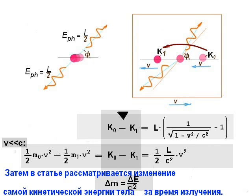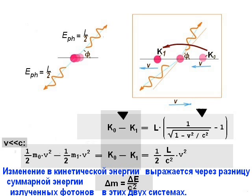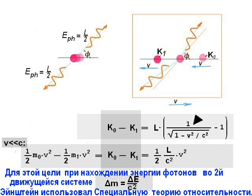Further, he considers the change in this kinetic energy of the massive body during the emission. And he expresses this change through the difference of the total emitted energy in two systems. To find for this purpose the energy of photons in the moving system, Einstein uses the special relativity theory.